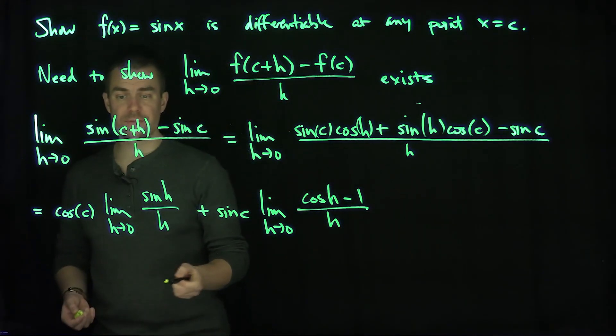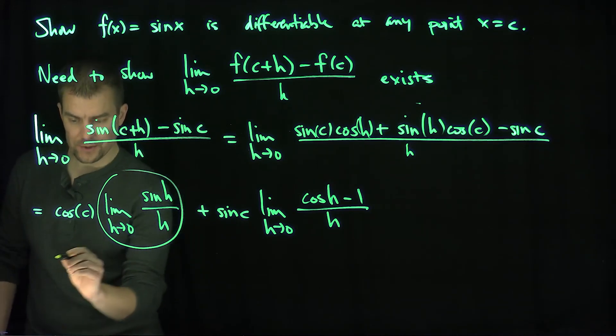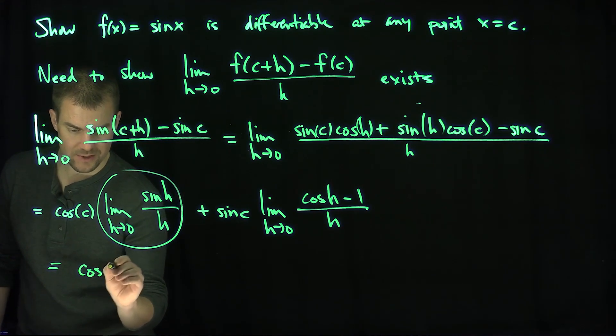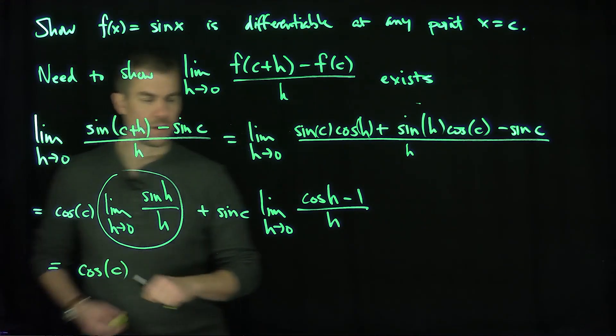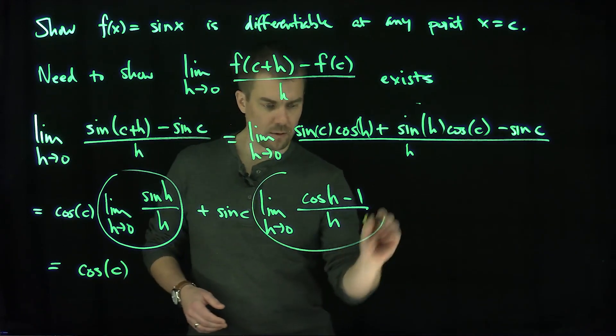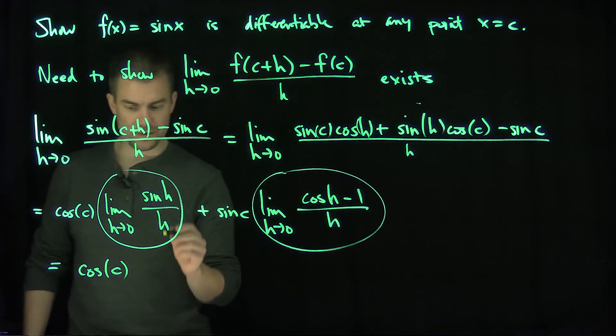Now we've seen in a previous video that this limit over here tends to one, so this is going to be cosine of c. That limit exists and tends to one from a previous video. And then this limit over here from the same exact video shows that that limit tends to zero.